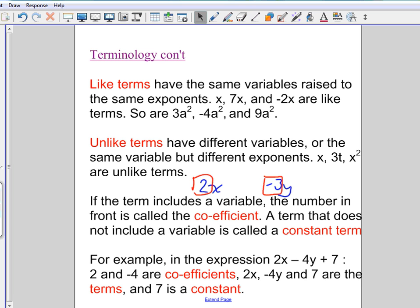A constant is a term that doesn't have any variables. So for example, in the expression 2x plus 5, the constant would be 5. If my expression was 2x minus 5, my constant is now negative 5. So you really have to be careful. The sign goes with it. So negative 5 would be the constant.